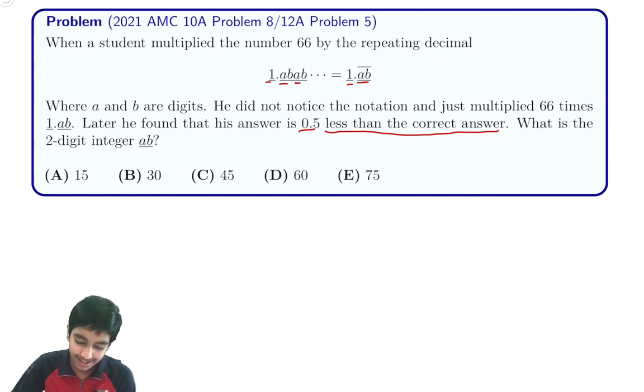So we can see that 1.AB is equal to 1 plus whatever AB is. I'm talking about AB the number, not AB A times B, so I'll just put a line like they said here. So AB the number divided by 100, right? Because of the tenths and hundredths place in the decimal.